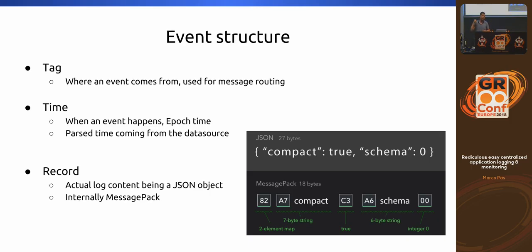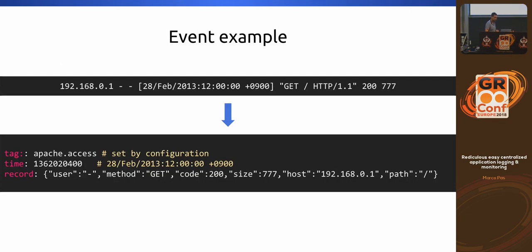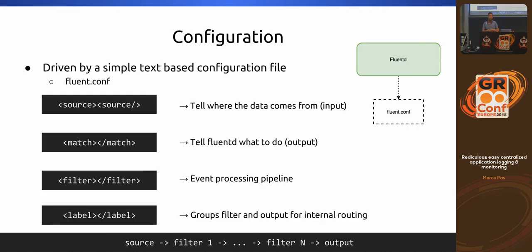Fluentd creates events from the data. An event has three parts: a tag, a time, and a record field. A tag indicates where the information is coming from — could be a service name, a Docker container ID, whatever you want. A timestamp and a record — the record is the actual log data you shipped to Fluentd. So if you have an HTTP access log, this translates to a Fluentd event with a specific tag, a time, and the record inside it.